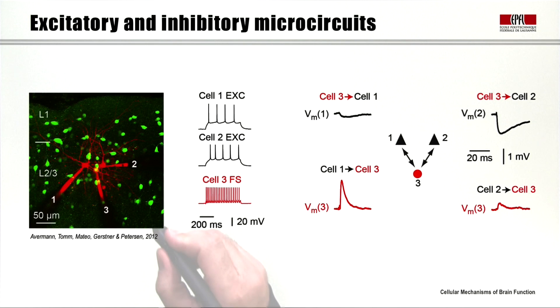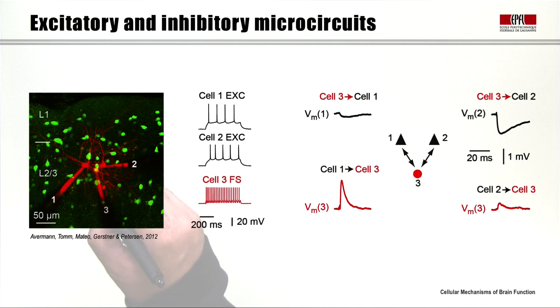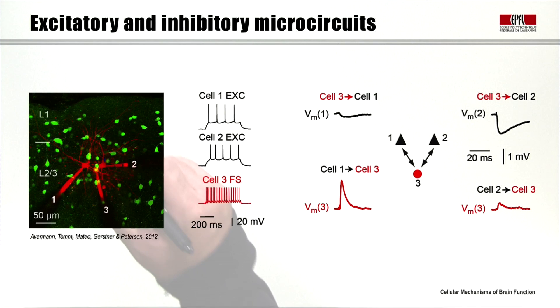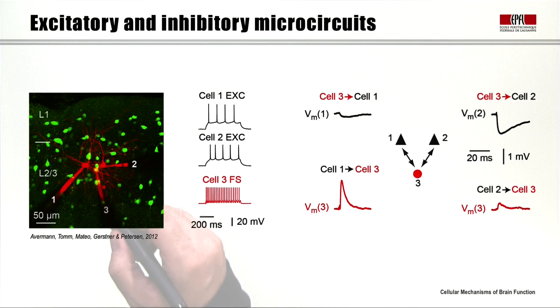This brain slice is from a transgenic mouse that expresses green fluorescent protein in all the GABAergic neurons, so we have green GABAergic neurons, and excitatory pyramidal cells — the majority of cells — are invisible except when being recorded from, where we have red fluorescence from the recording electrode filling the soma and dendritic arborizations. Cell 1 and cell 2 are excitatory pyramidal cells. Injecting depolarizing current into these two cells, they fire action potentials with broad waveforms and slow firing rates, typical of excitatory pyramidal cells.